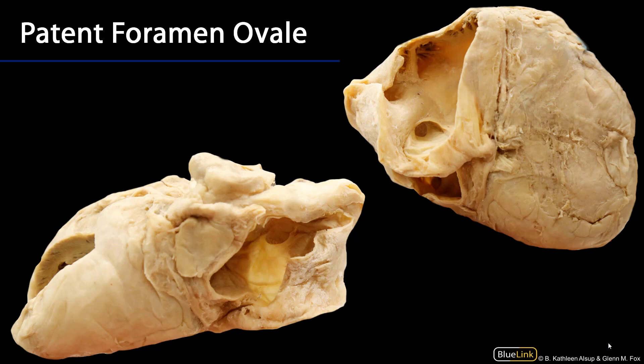During in utero gestation, the interatrial septum has two parts, or two septa. There's a primary and a secondary septum. These septa are slightly unopposed, and so there's an opening between these two septa, referred to as the foramen ovale, or the oval window.